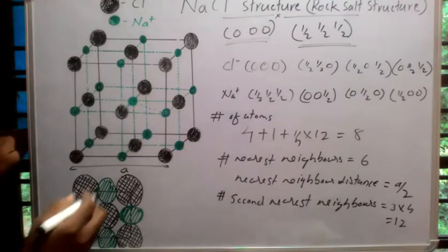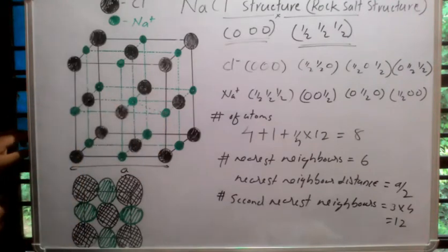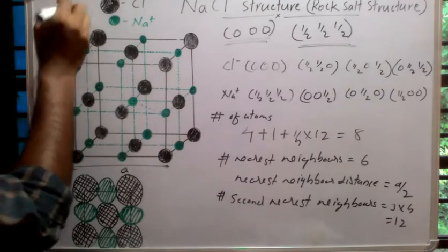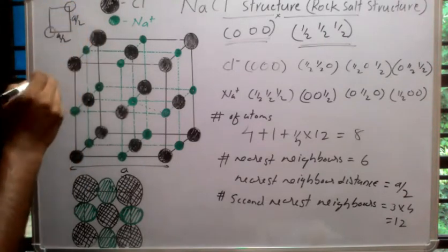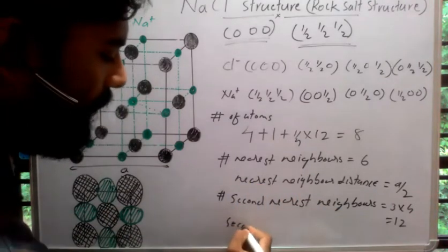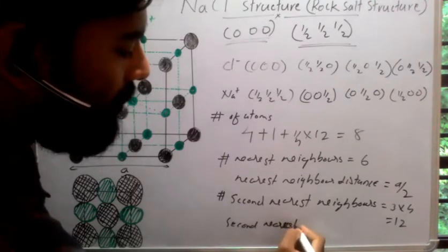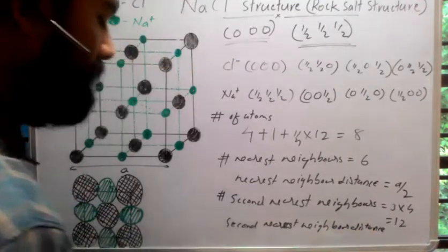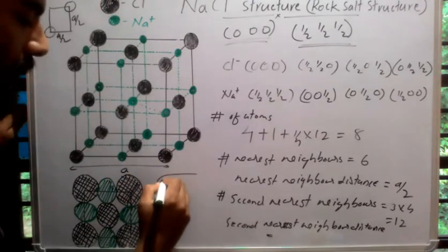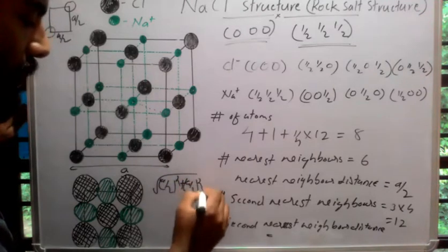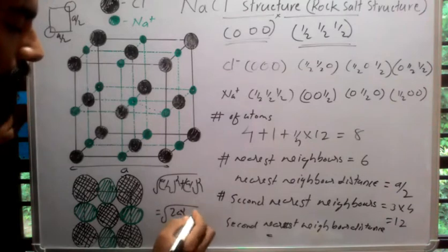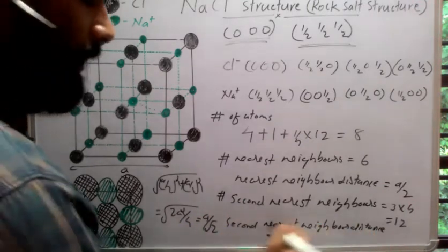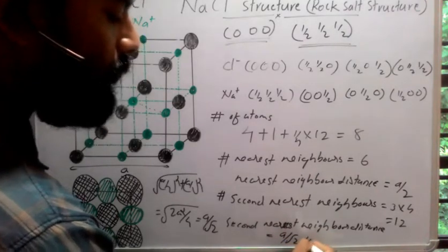The second nearest neighbor distance is the distance between the central atom and a corner atom on the same plane. Taking that plane, the central atom to corner distance involves two legs each of length a/2. So the second nearest neighbor distance = √((a/2)² + (a/2)²) = √(2a²/4) = a/√2.